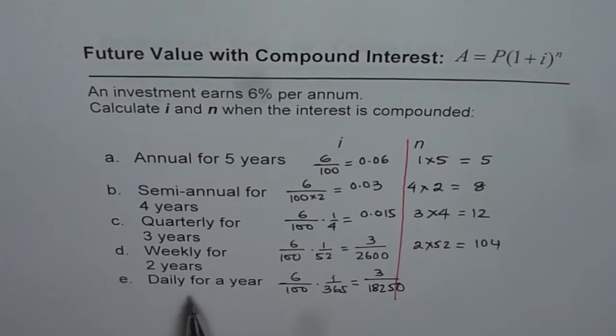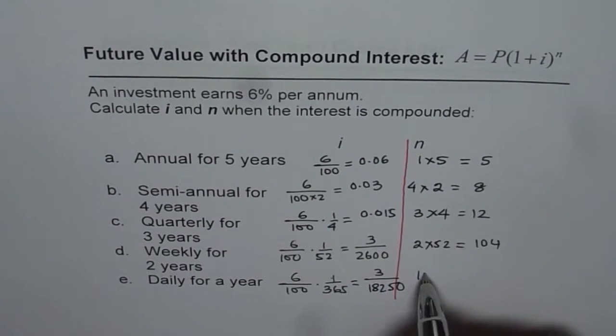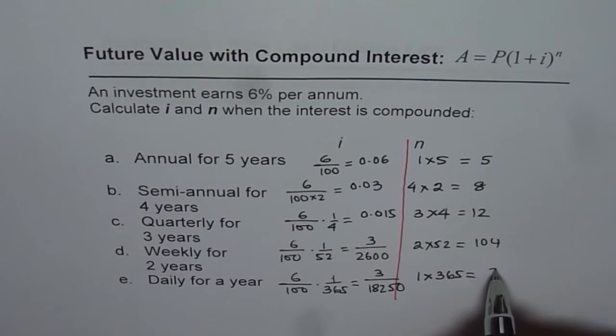Now since the interest is applied daily for a year, so it will be 1 year times 365. So n value will be 365.